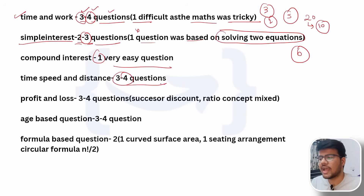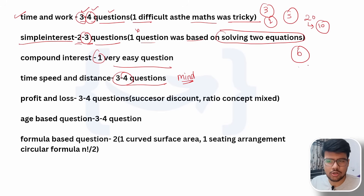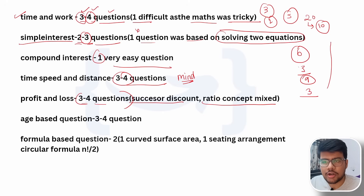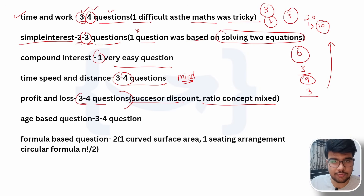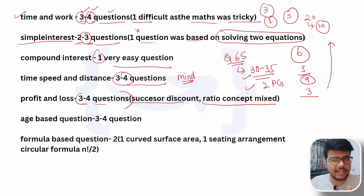Compound interest had one very easy question, bringing the count to six. Time and distance had three to four questions, all simple formula-based — very easy. Let's say nine questions are solved. Profit and loss had three to four questions covering discounts and ratio concepts. If you solve three of those, you've already passed the rough cutoff. There is no sectional cutoff — this is just to be on the safer side.